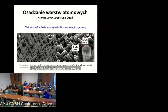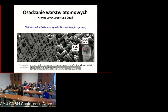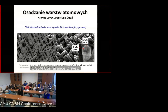Tutaj macie przykład zastosowania techniki ALD. Po lewej stronie widać obraz spod mikroskopu skaningowego — to są struktury nanodrutów telurkowo-cynkowych. Te nanodruty zostały, co pokazane jest po prawej stronie, pokryte cienką warstwą tlenku cynku przy pomocy metody ALD. To jest ta otoczka dookoła samego nanodrutu.